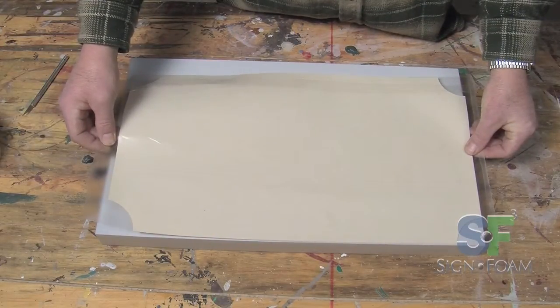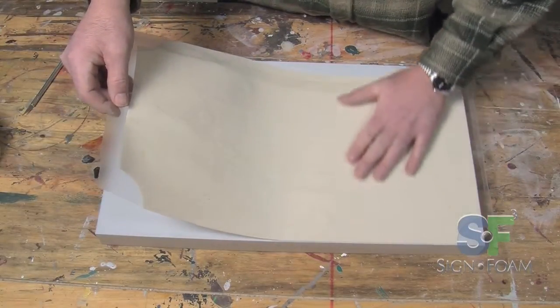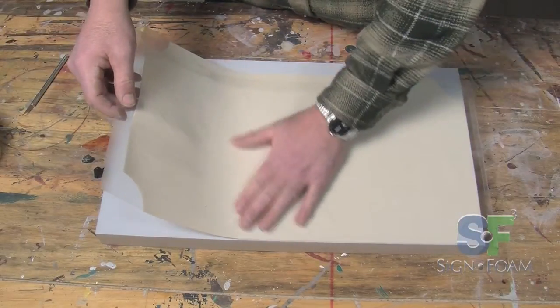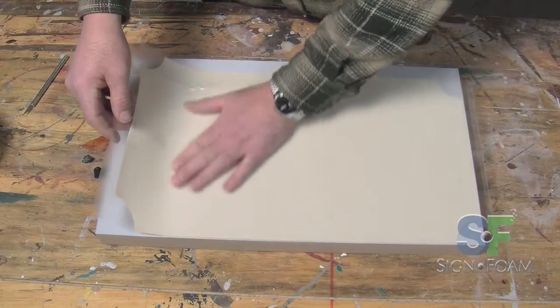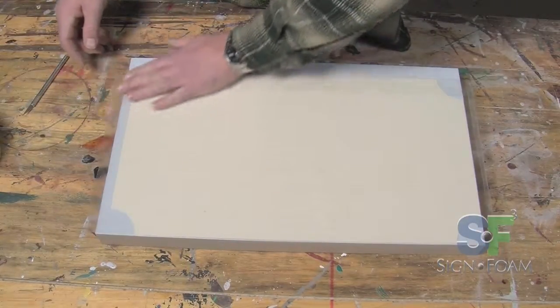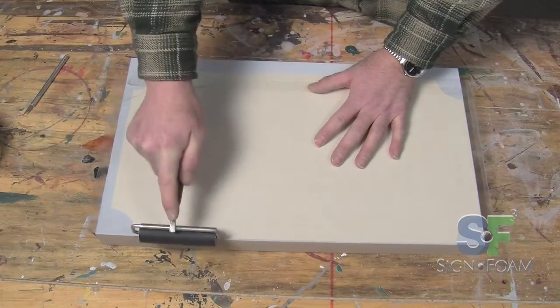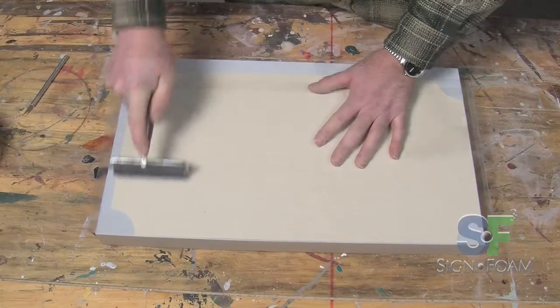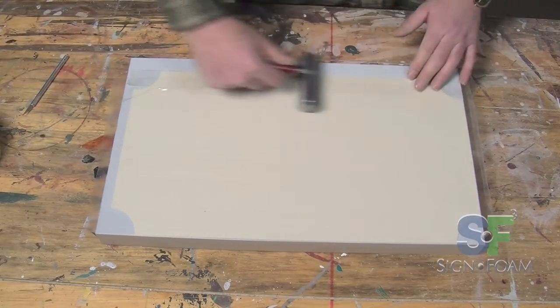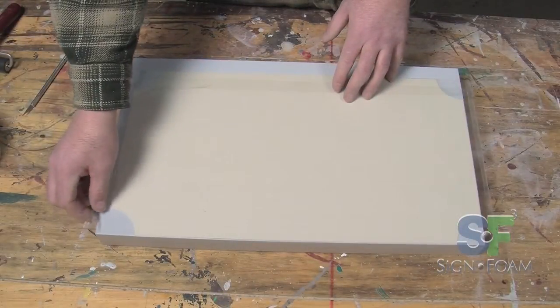Once you're sure it's properly aligned, push one side down and slowly ease your way across, pushing out the air as you go. Once again, use your roller to adhere the stencil to the signfoam. Once you've rolled the entire surface, remove the transfer tape.